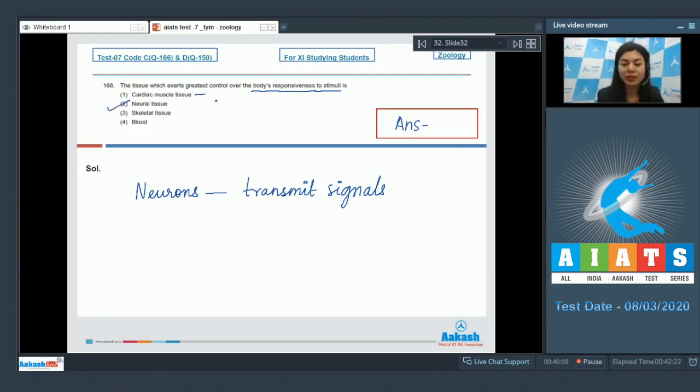Cardiac muscle tissue is involved with the pumping of blood throughout the body. The skeletal tissue brings about the locomotion in the body. Correct answer is option number 2, neural tissue.